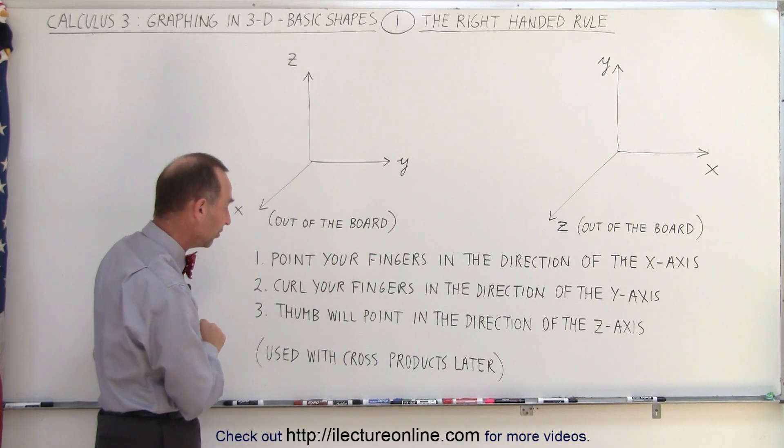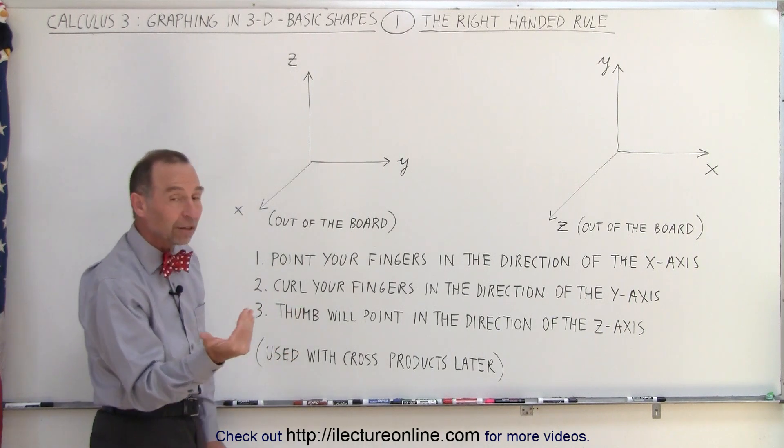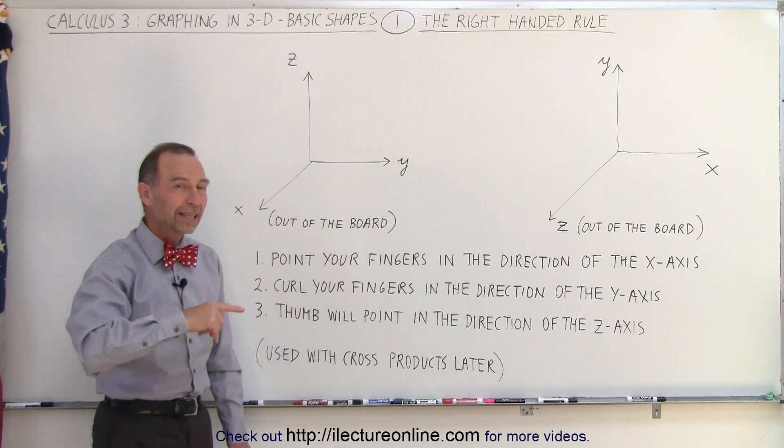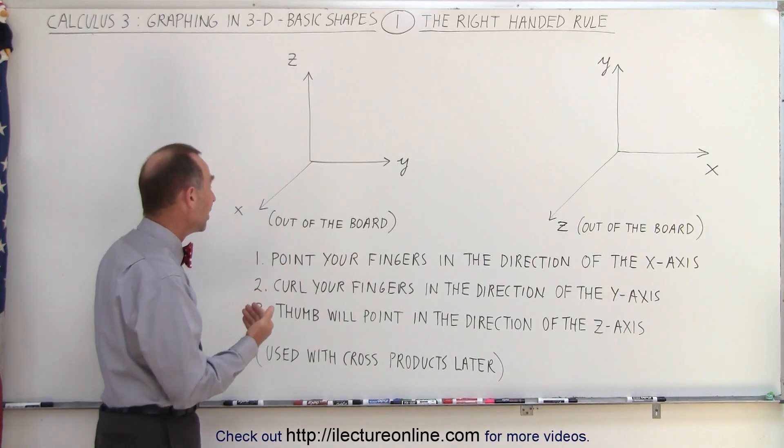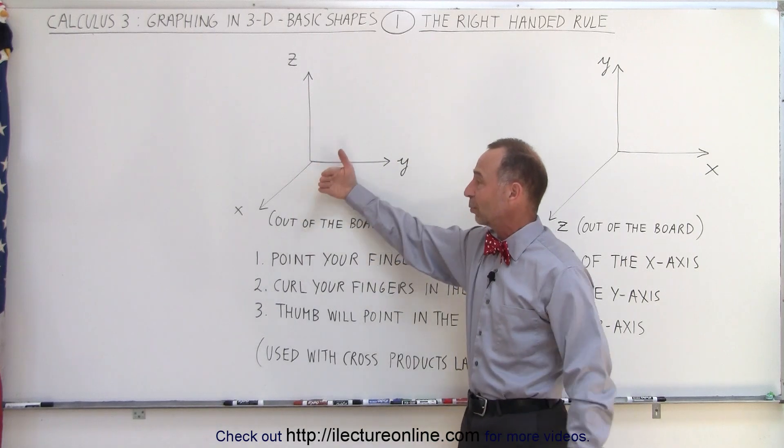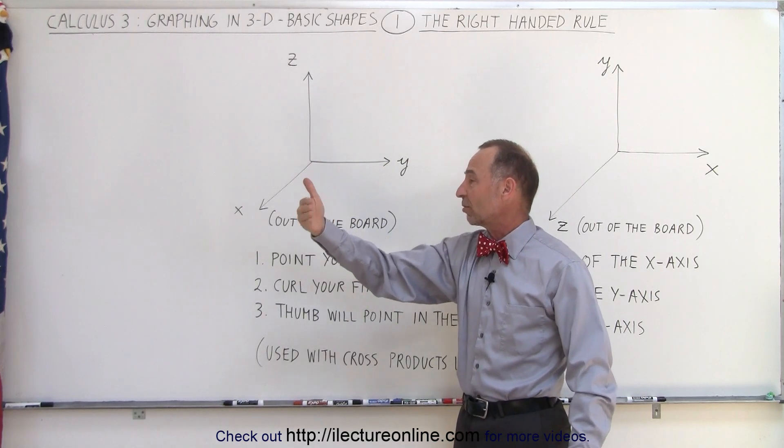Point your fingers in the direction of the x-axis, curl your fingers in the direction of the y-axis, and your thumb will point in the direction of the z-axis. Now, if these two are the same, we should get the exact same result. So let's see. Here we need to point our fingers in the direction of the x-axis, which is out of the board. Then we want to curl our fingers in the direction of the y-axis.